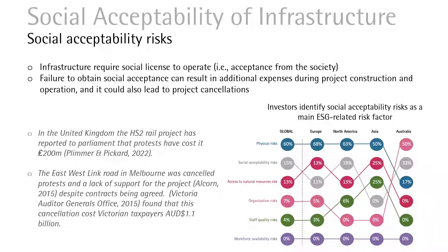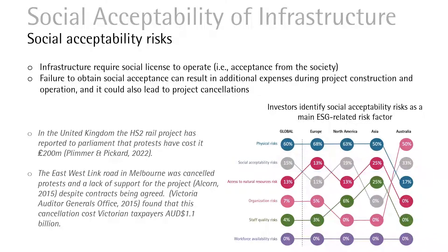Social acceptance is obtaining the social license to operate. Failure to obtain this can result in large expenses or even being shut down. In the EDIC Infra ESG survey, social acceptance risk is regularly the second most important risk for investors after physical risk. Some anecdotal examples include the HS2 rail project as well as the East West Link Road, both of which have incurred major expenses as a result of failing to develop social acceptance. It is important therefore to measure this in an ongoing way.